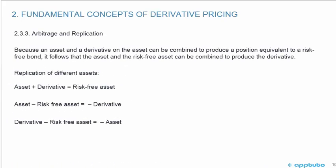Now moving on to arbitrage and replication. Because an asset and a derivative on the asset can be combined to produce a position equivalent to a risk-free bond, it follows that the asset and the risk-free asset can be combined to produce the derivative. The replication relationships are: asset plus derivative equals the risk-free asset; asset minus the risk-free asset equals the negative derivative (short on the derivative); and the derivative minus the risk-free asset equals the negative asset (short on the asset).